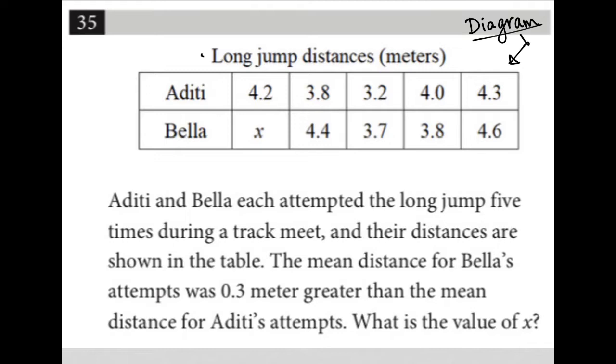I have long jump distances here. We have two people, Aditi and Bella. And it looks like we have one, two, three, four, five of these distances for each of them.